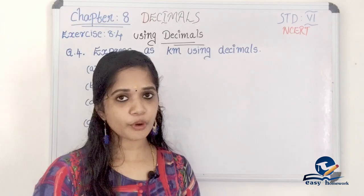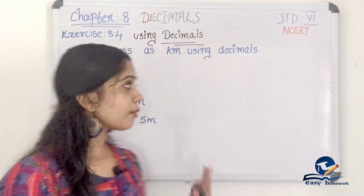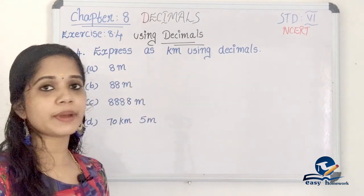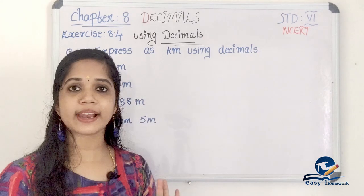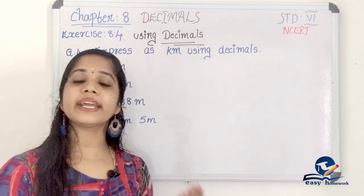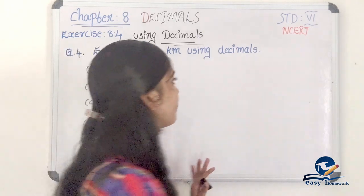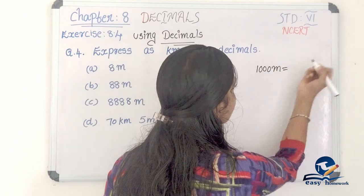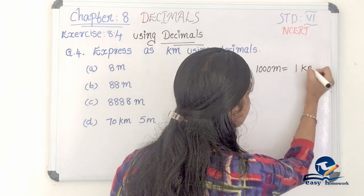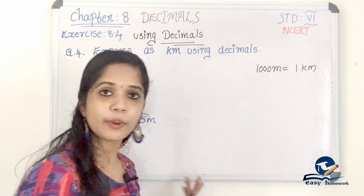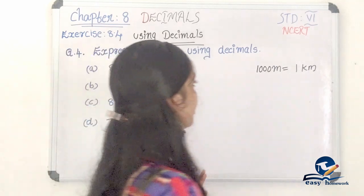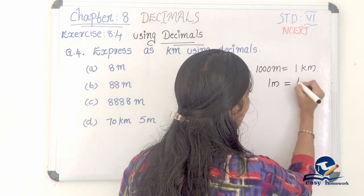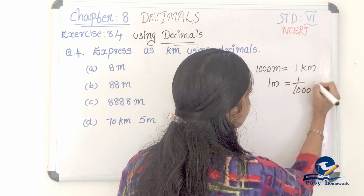Question number 4: Express as kilometer using decimals. 1000 meters equals 1 km. Therefore, 1 meter equals 1 by 1000 km.